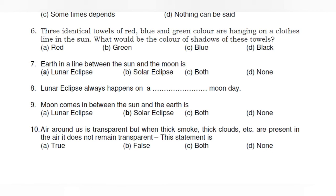One important point: it is not advisable to view a solar eclipse with the naked eye because the eyes can be damaged permanently. We should watch it through safety glasses. A smoked sheet of glass can also be used to view the solar eclipse — we should never see the solar eclipse with naked eyes.